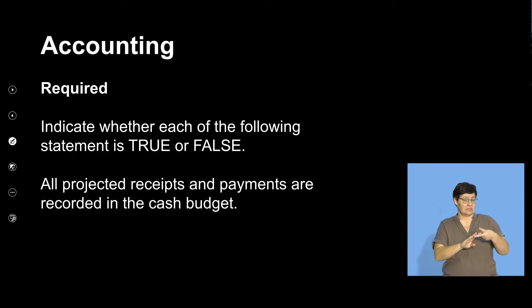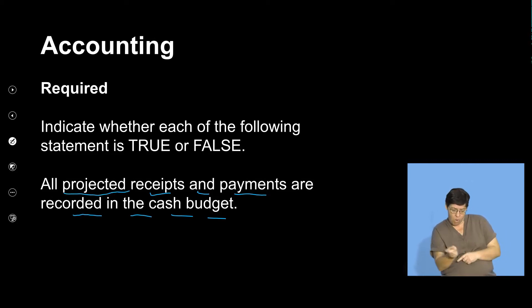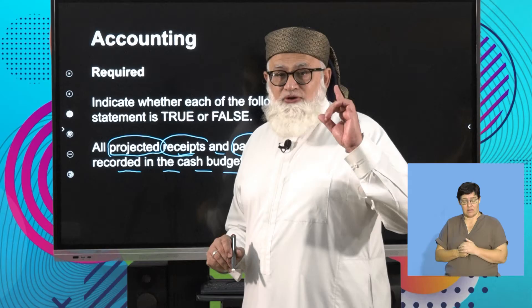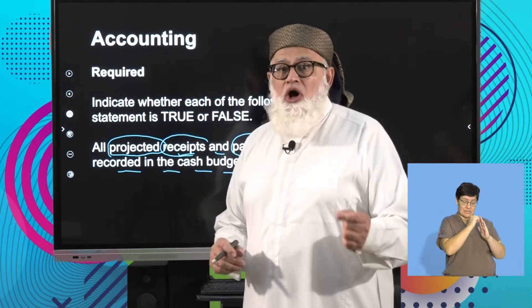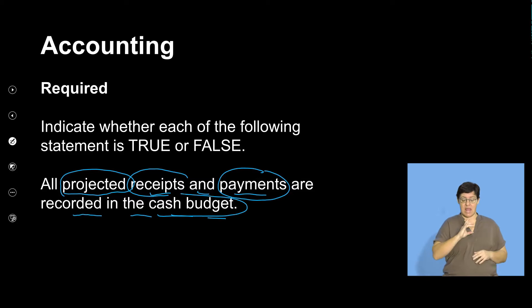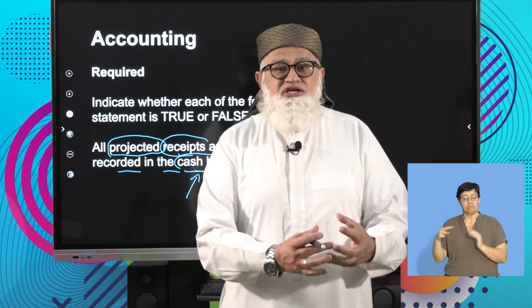The next statement says: all projected receipts and payments are recorded in the cash budget. Let's analyze it. All projected — we're working with a projection, a forecast. Receipts and payments should give you an indication: are we talking about the projected income statement or the cash budget? It says recorded in the cash budget. Clearly that is true, because your statement of receipts and payments is reflected in your cash budget.